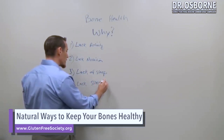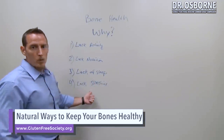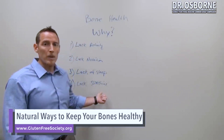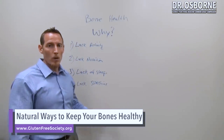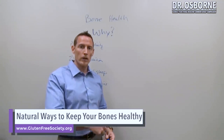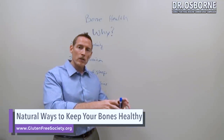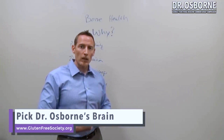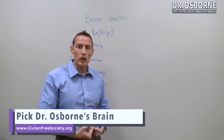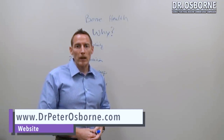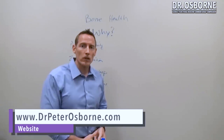Vitamin D is necessary — we absorb vitamin D when UV light from the sun hits our skin. There's a cholesterol in our skin called 7-dehydrocholesterol that's converted into vitamin D. That vitamin D circulates through our body and travels to our intestinal cells, telling them to absorb calcium more efficiently.